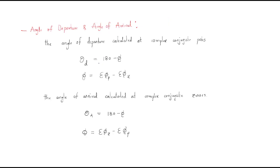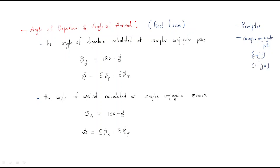Up to now we discussed only real poles in root locus concepts. If complex conjugate poles are available — that means poles may be of the form a±jb or c±jd — these are complex conjugate poles. When these poles are available, the concept of angle of departure as well as angle of arrival is introduced. The angle of departure is calculated for complex conjugate poles.